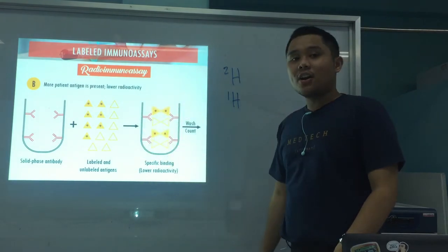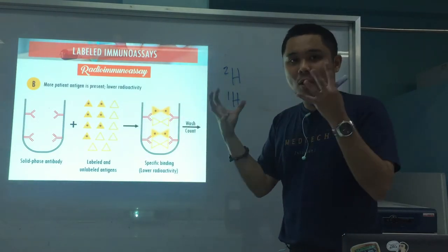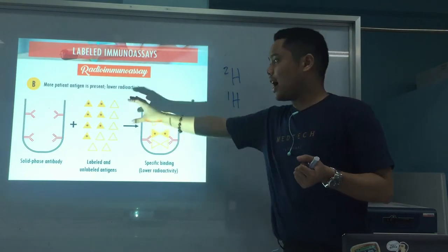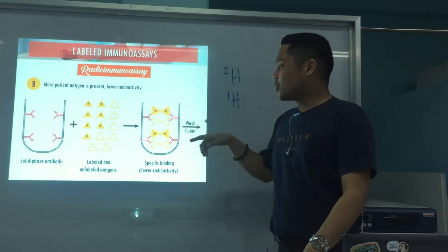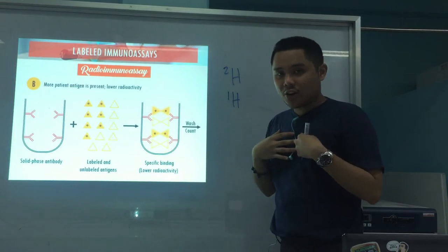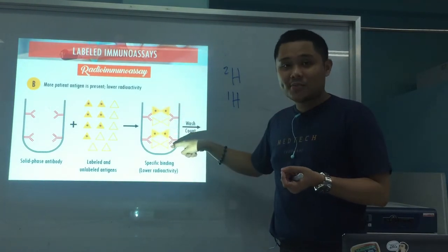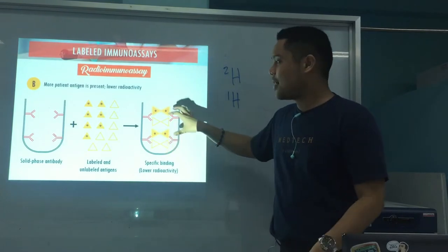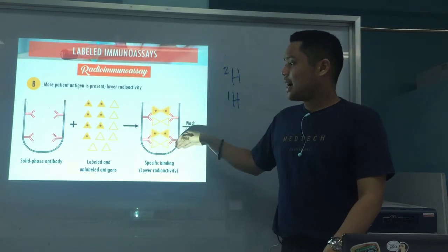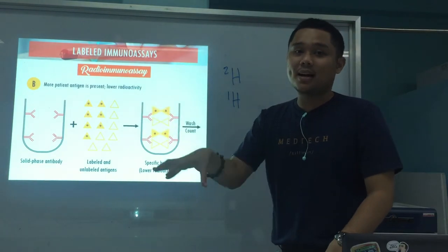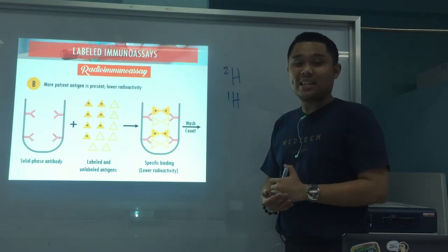Second scenario: more patient antigen compared to radio-labeled antigen. Since it's competitive, they compete for the limited binding sites. Of course, the more abundant one wins. So since more patient antigen is present, they bind more to the antibody — less radio-labeled antigen binds — therefore less radioactivity is detected. Which means the patient antigen was high because it overpowered and bound to the antibodies on the solid-phase material.